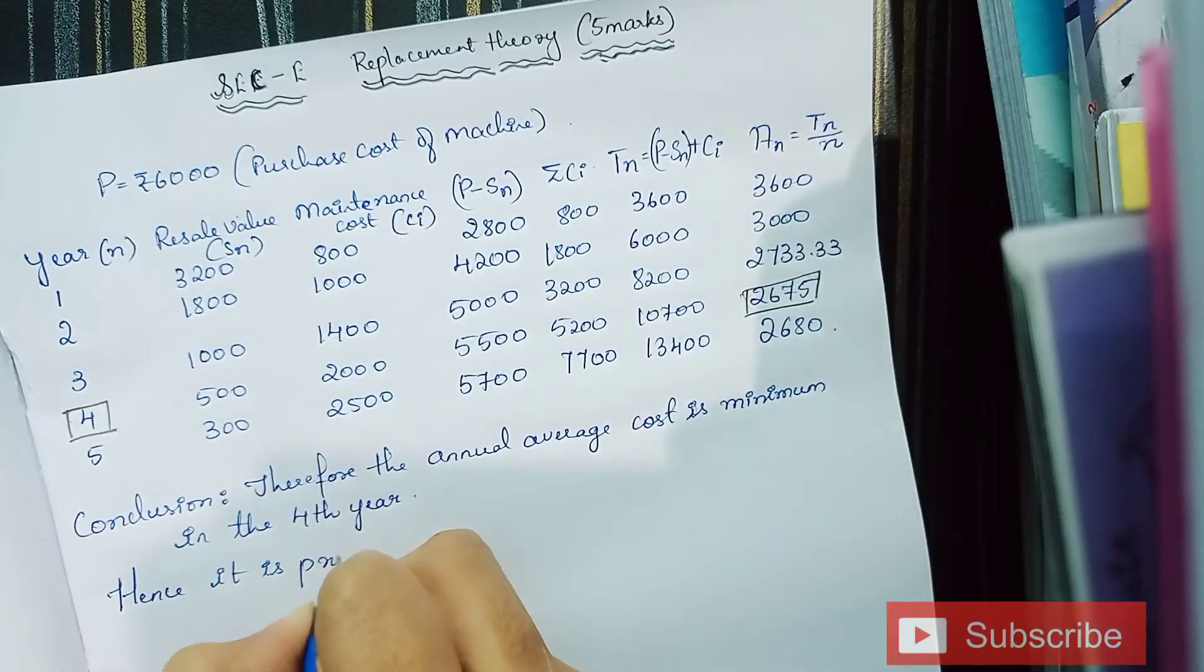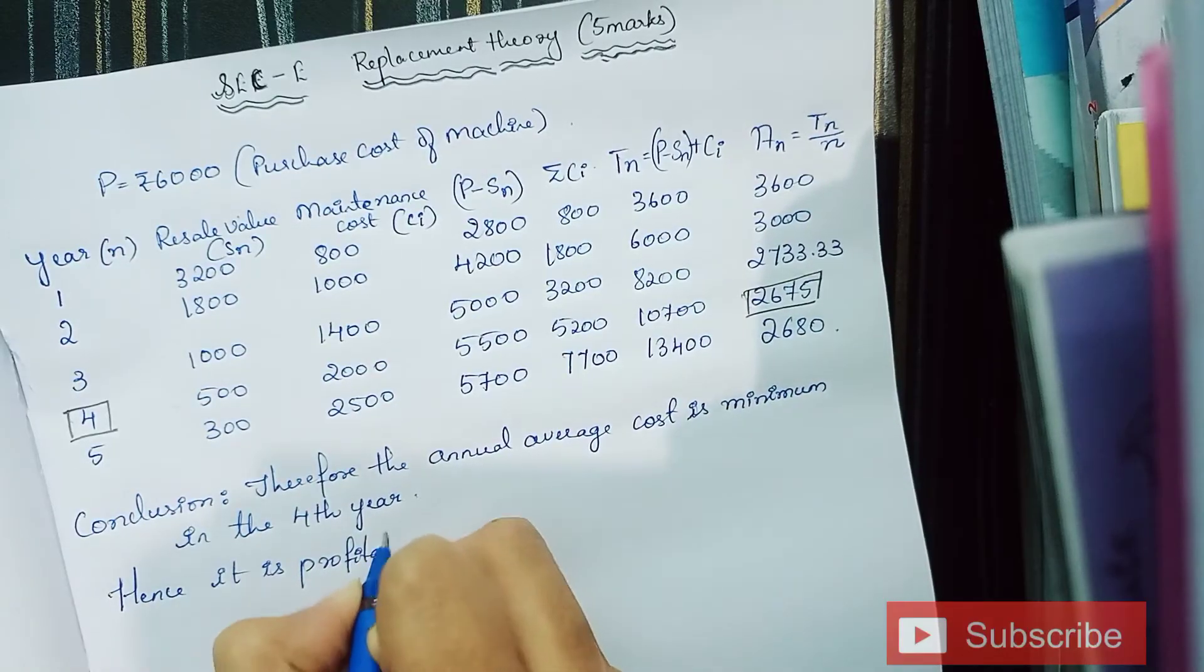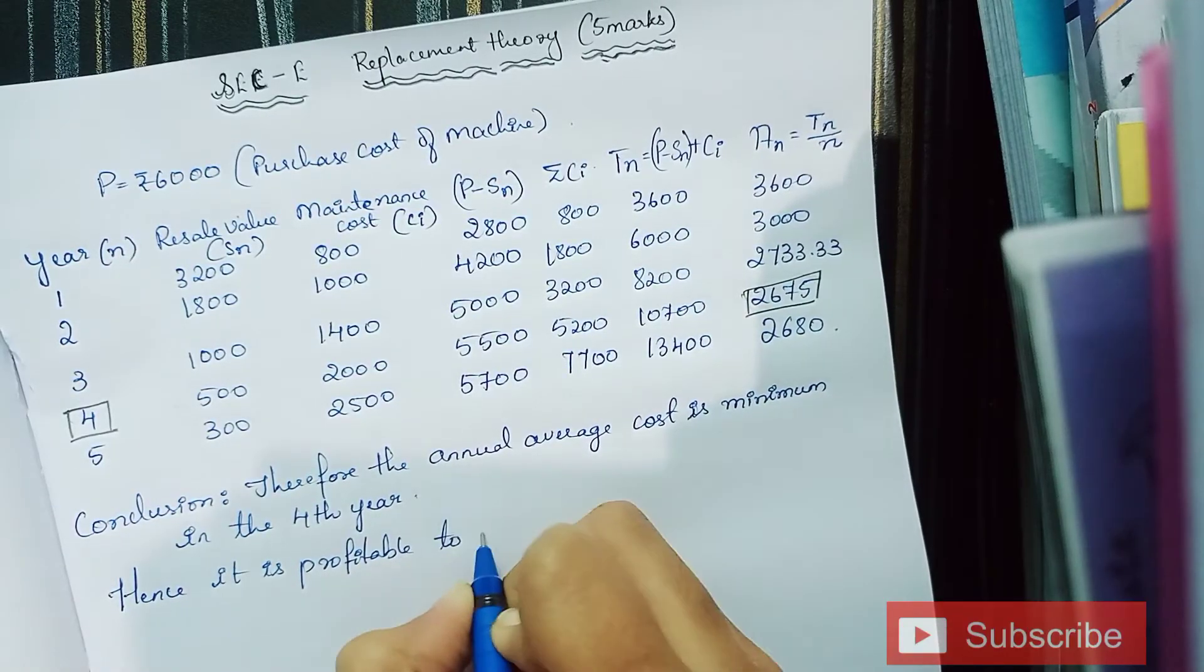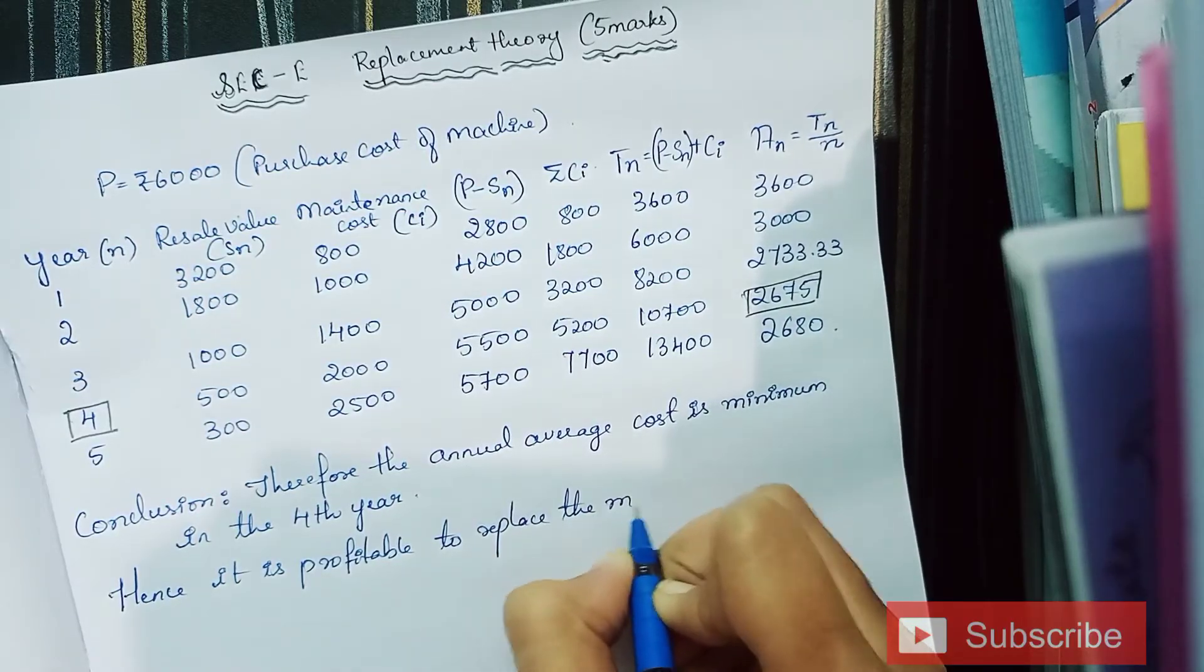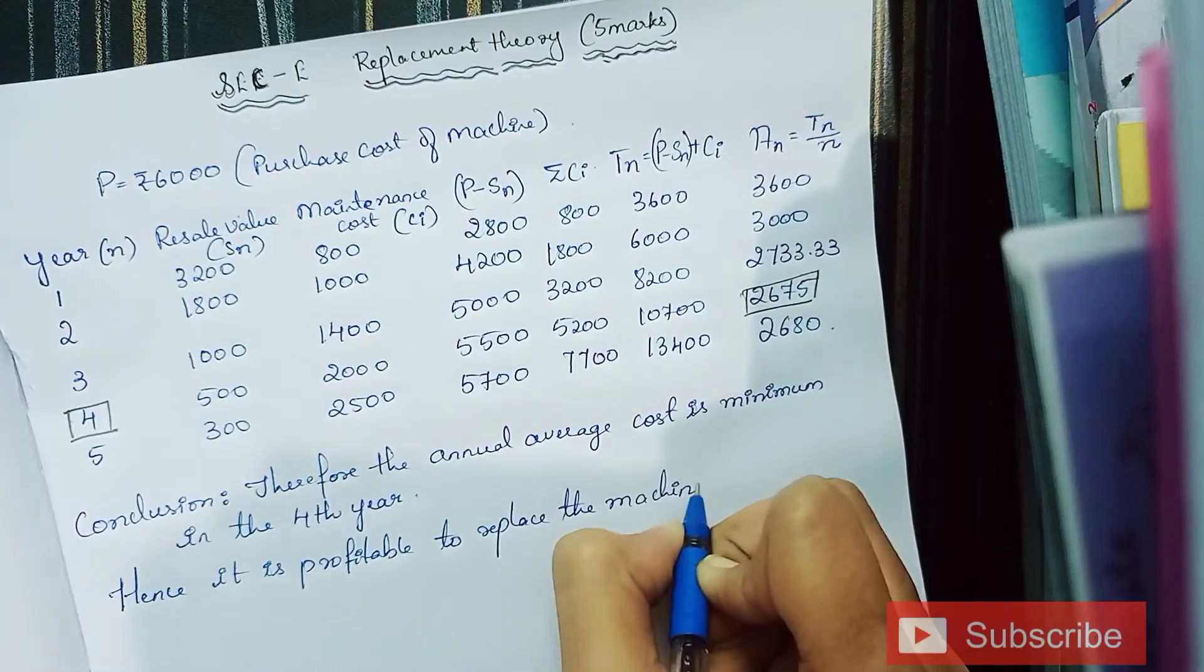Hence it is profitable to replace the machine at the end of fourth year. The term 'at the end of fourth year' is very important, or else one mark will be deducted.